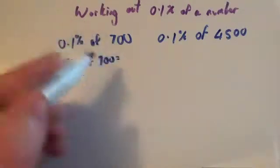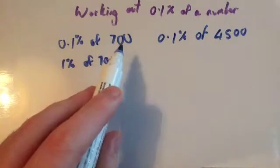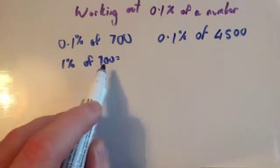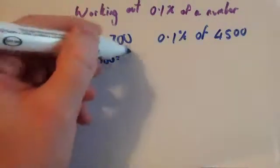So 1% of 700, you divide 700 by 100. Remember, you get 1%, you divide by 100. So 700 divided by 100 is equal to 7.